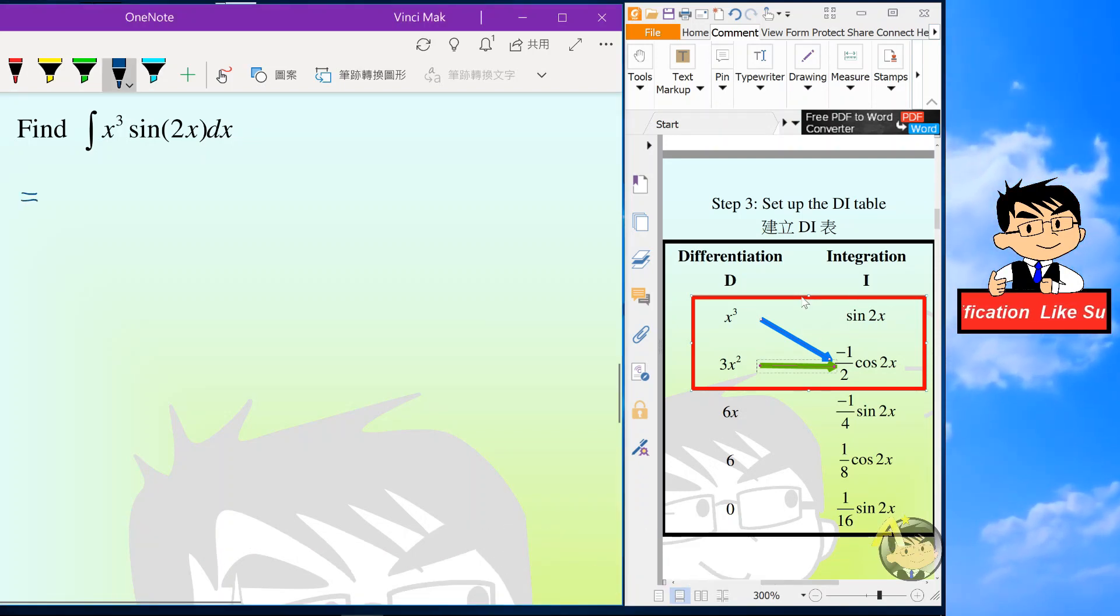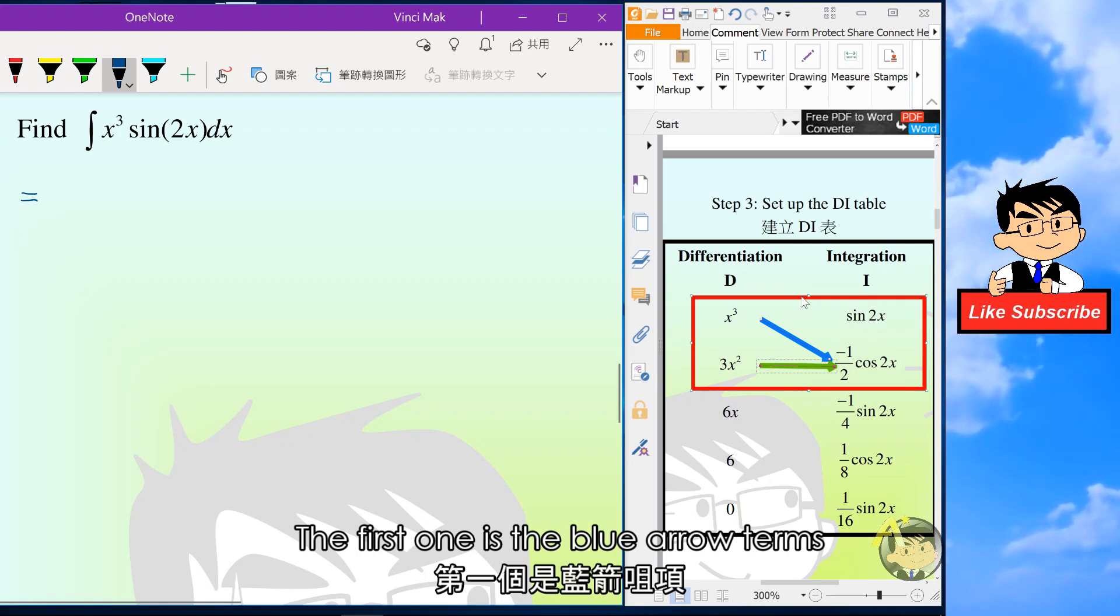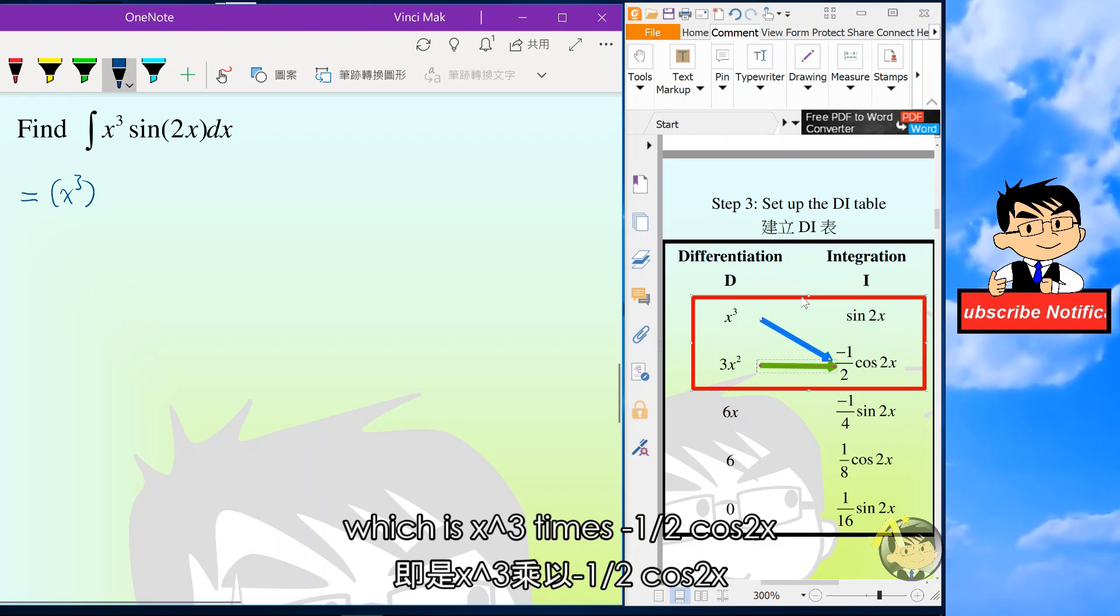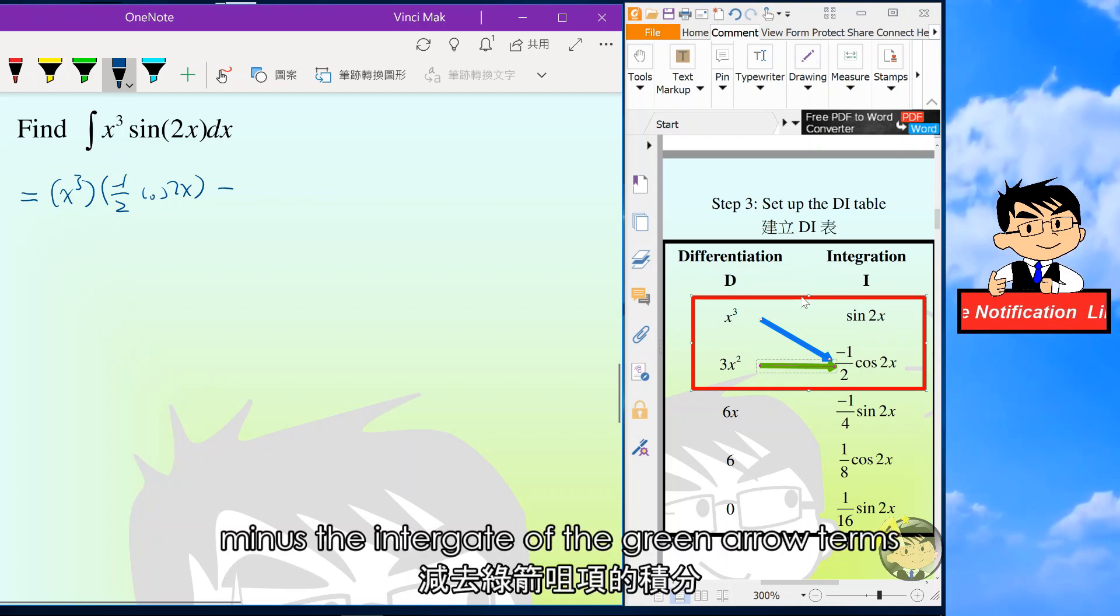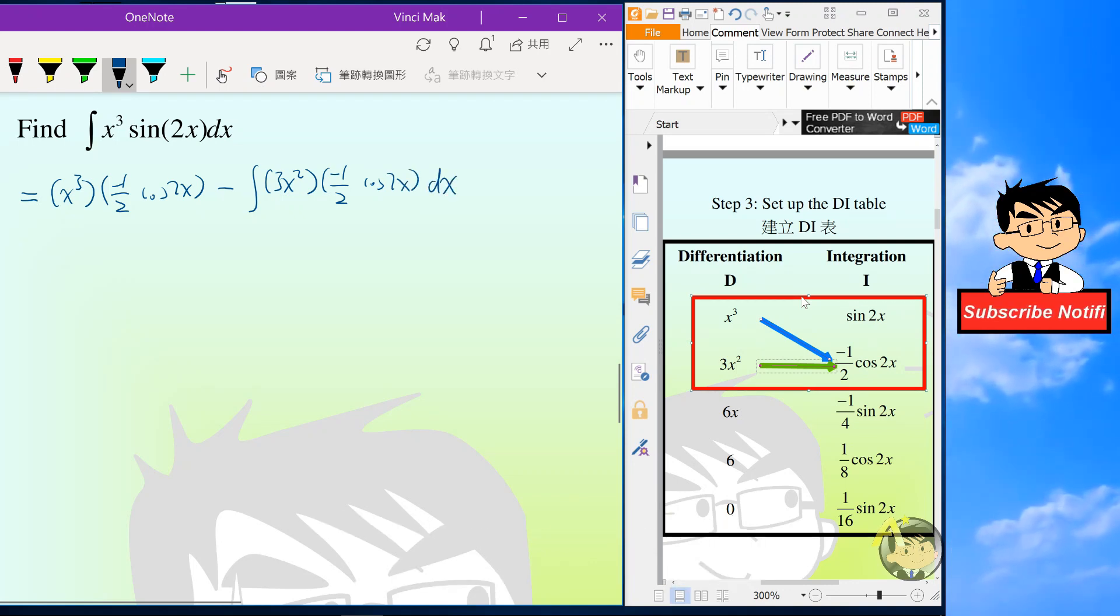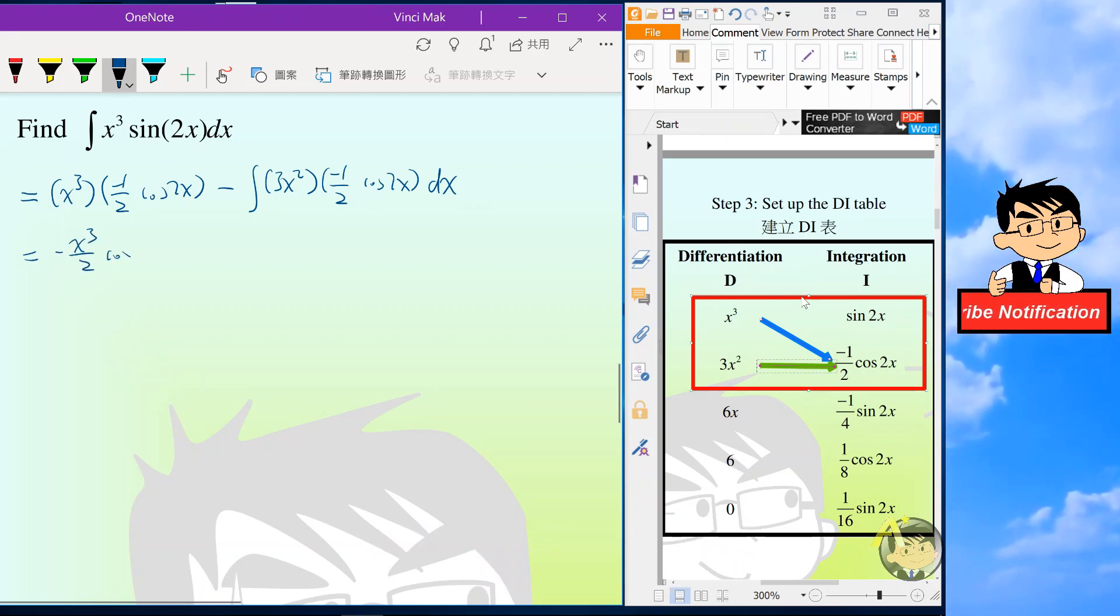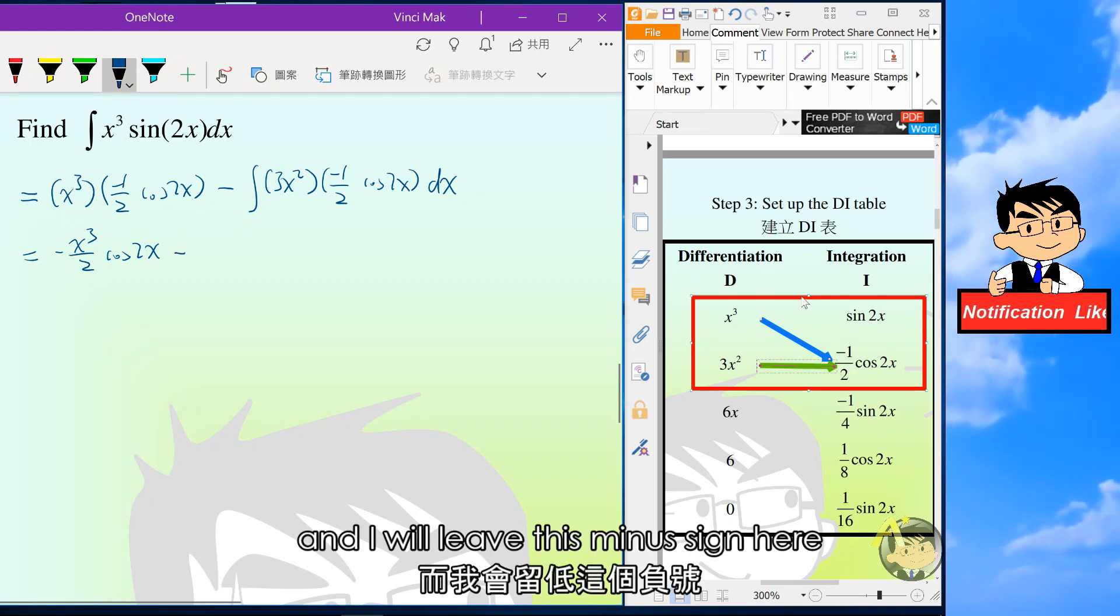On the first line, I will transform the question into two new terms. The first one is the blue arrow terms, which is x cubed times negative half cosine 2x minus the integral. I will simplify this term a bit and I will leave this minus sign here.